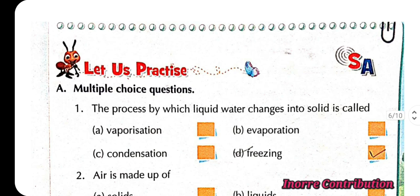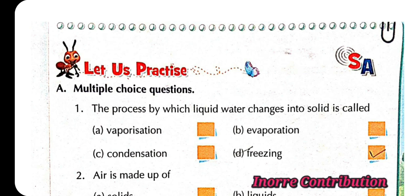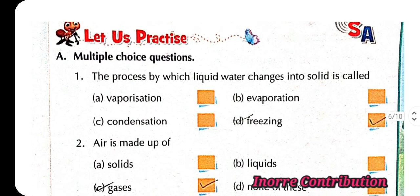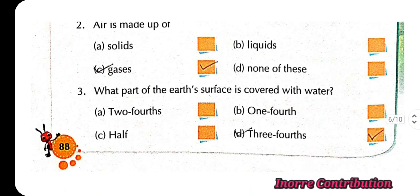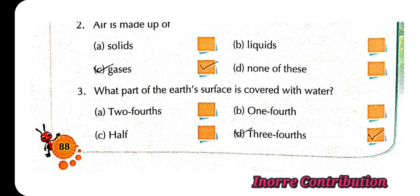Let us practice multiple choice questions. First, the process by which liquid water changes into solid is called, option D, freezing. Second, air is made up of, option C, gases. Third, what part of the earth surface is covered with water? Option D, three fourths.